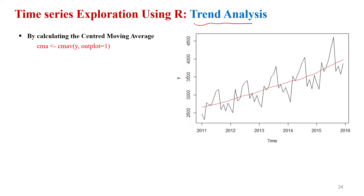To perform trend analysis, we draw the time series plot with time on the X axis and Y on the Y axis. Then we apply the centered moving average using the CMAV function, where Y is the variable and output plot is set to 1. This function automatically decides whether to calculate a 3-month, 4-month, 5-month, or 15-month centered moving average. But you can also force a specific window size, such as 3 months or 4 months.